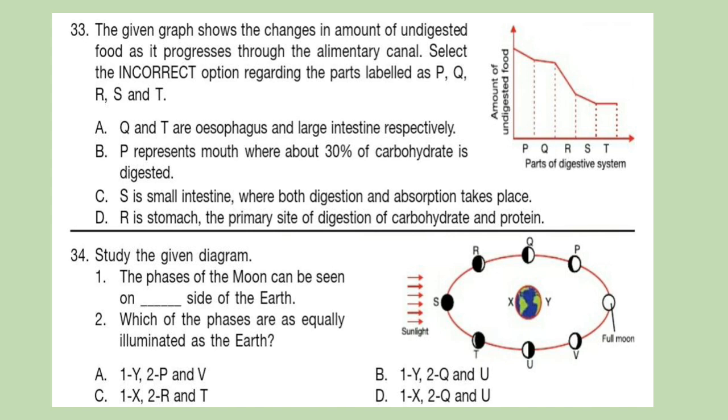Question 33: The given graph shows the changes in amount of undigested food as it progresses through the alimentary canal. The path is labeled as P, Q, R, S and T. Look at the options and select your answer carefully.